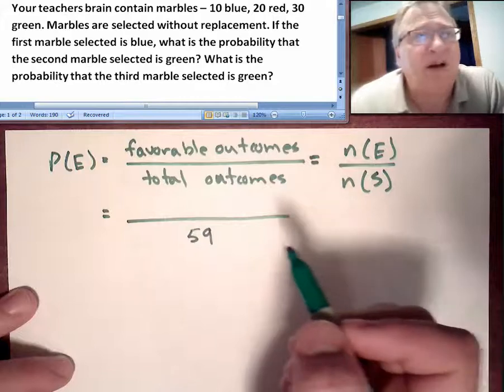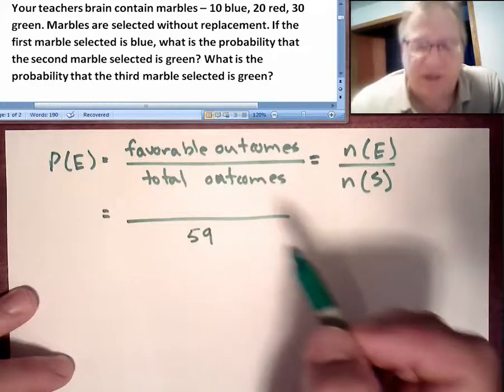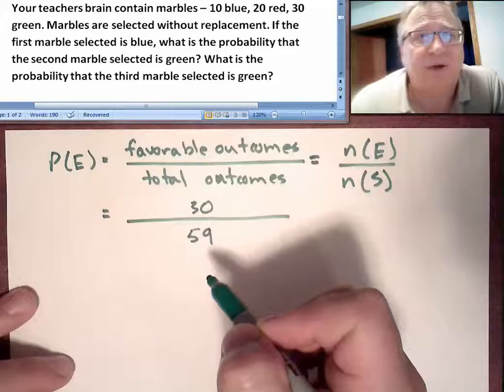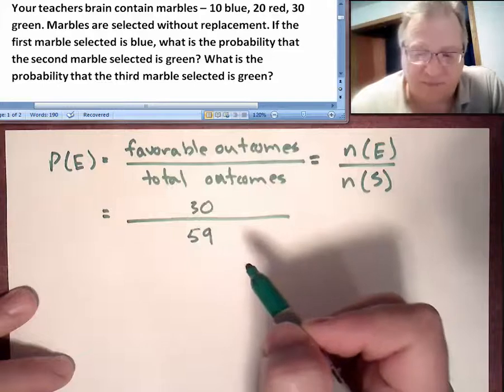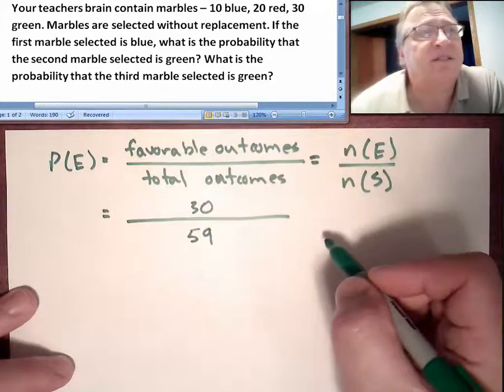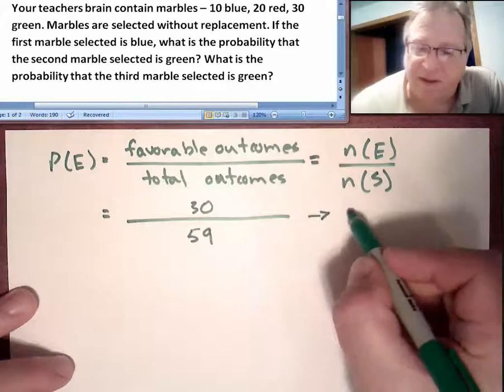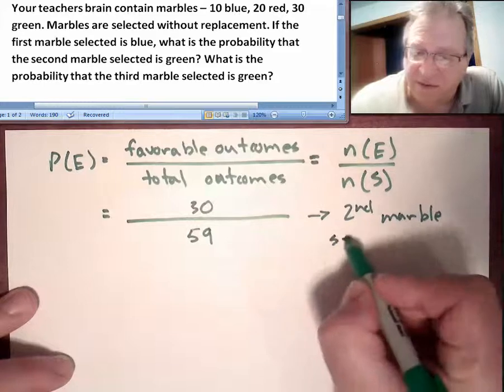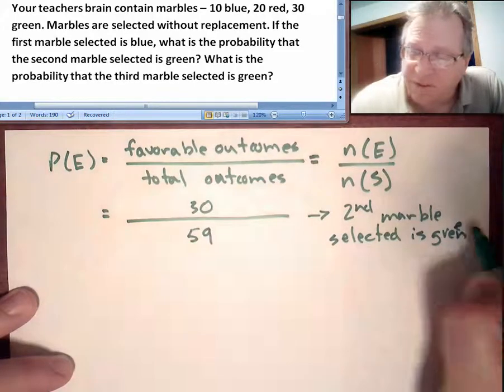How many favorable outcomes are there? How many ways can we draw a green marble? There were 30 green marbles. We have a 30/59 chance of drawing a green marble the second time that we pull a marble from that teacher's brain. Let's write what this is. This is probability that the second marble selected is green.